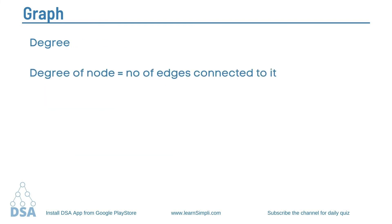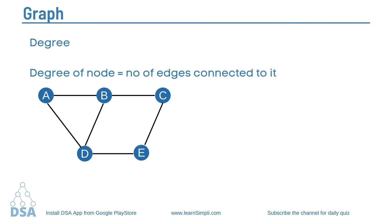Next, let's talk about the degree of a node. In an undirected graph, the number of edges connected to a node is called the degree of that node. For example, the degree of A is 2 because 2 edges are connected to node A, and the degree of D is 3 because 3 edges are connected to node D. The degree of a node is simply the number of edges connected to it.